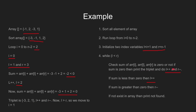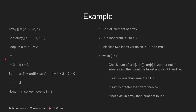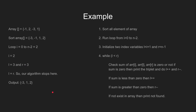Now, we increment l and decrement r. Now l is greater than r, so we can move on to i equal to 1. For i equal to 1, l is equal to 2 and r is equal to 3. The sum of the ith, lth and rth term is 2, which is greater than 0, so we decrement r. Now r is equal to 2 and l is equal to 2, which does not satisfy the while condition. So we can move on to i equal to 2. When i is equal to 2, l and r become equal to 3, which does not satisfy the while condition. So our algorithm ends here. The output is minus 3, 1 and 2 as it has sum equal to 0.